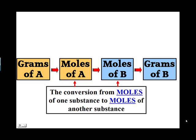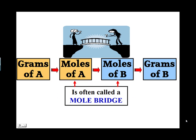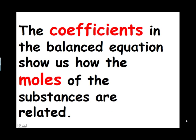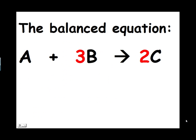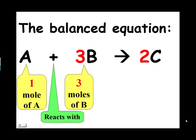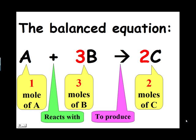The conversion from moles of one substance, like A, to the moles of another substance, like B, is often called the mole bridge calculation. The coefficients in the balanced equation for a reaction show us how the moles of the substances are related. For example, the balanced equation A + 3B → 2C tells us that one mole of A reacts with 3 moles of B to produce 2 moles of C.